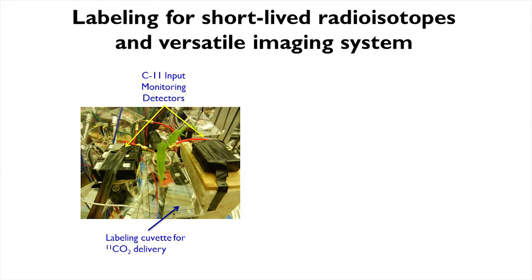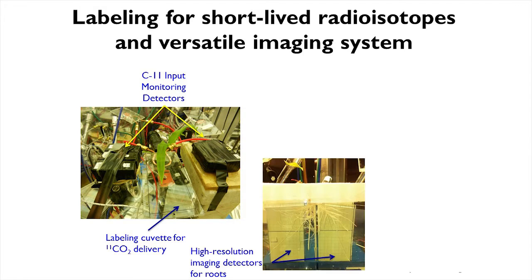We study how the carbon gets loaded into the phloem, how it gets transported from the leaf into the shoot and down. It takes a long time — we're interested in roots. We have coincidence counters because when the positronium annihilates it sends out particles at 180 degrees, so we have detectors on both sides and we're able to count the amount that gets loaded and transported down. We also have mobile detectors that we can move around depending on what area of the plant we're interested in.